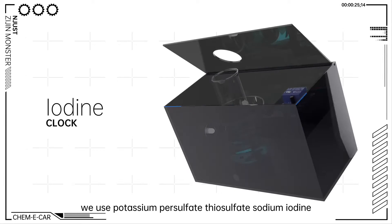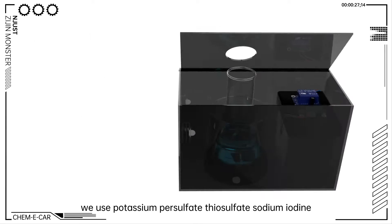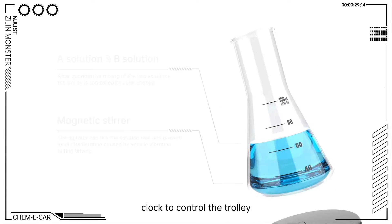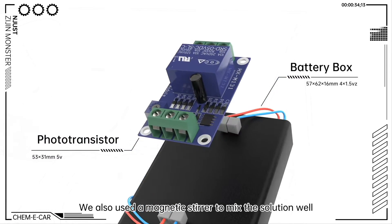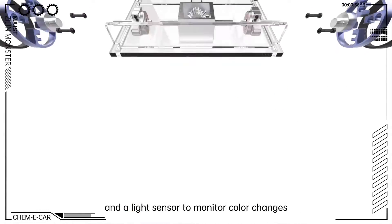On the control module, we used potassium-persulfate-thiosulfate-sodium-iodine clock to control the trolley. We also used a magnetic stirrer to mix the solution well and a light sensor to monitor color changes.